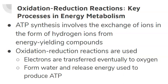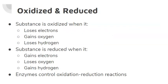The synthesis of ATP from ADP and inorganic phosphate involves the exchange of electrons in the form of hydrogen ions from energy-yielding nutrients, which includes carbohydrate, fat, protein, and alcohol. This process uses oxidation-reduction reactions, which is when electrons are transferred in a series of reactions from those energy-yielding compounds to oxygen. The reaction forms water and also releases energy to produce ATP. A substance is oxidized when it loses one or more electrons or gains oxygen. A substance is reduced when it gains electrons or loses oxygen. These two reactions occur together because another substance must gain the electrons that are lost and vice versa.